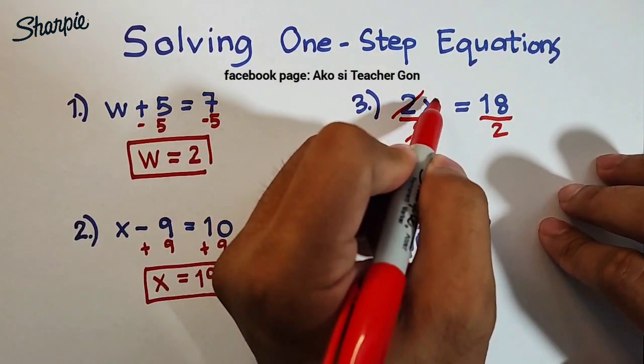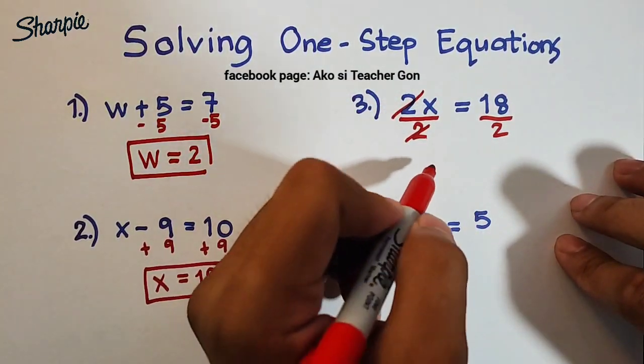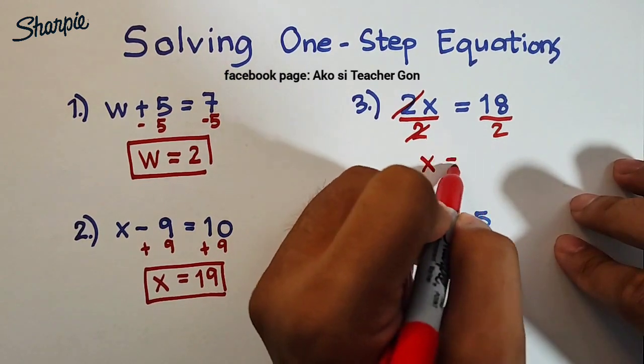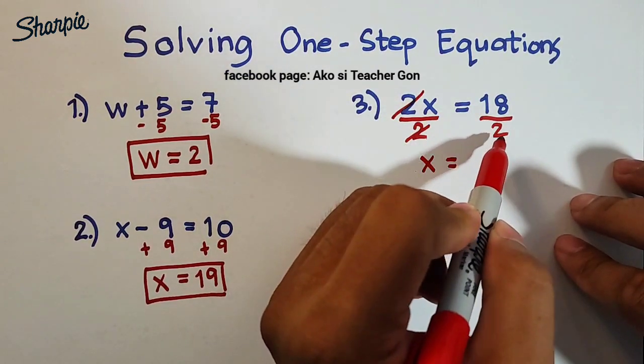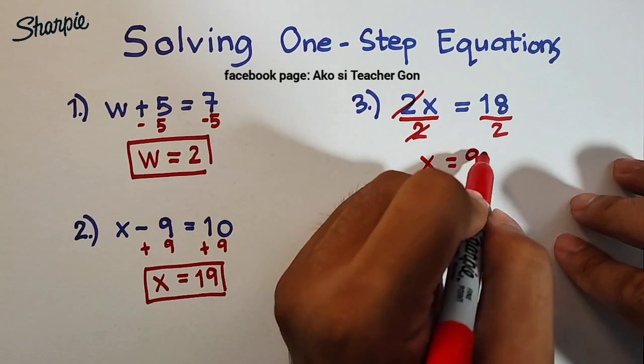So we can divide this, 2 divided by 2 is 1x, or in other words we can simply cancel out this one. So what will remain is the variable x. We have x = 18 divided by 2, and that is equal to 9.